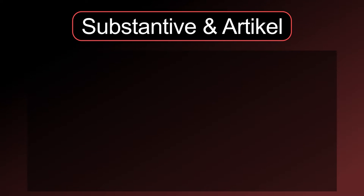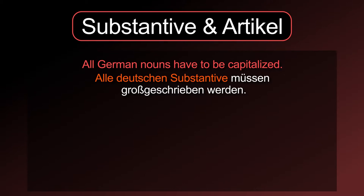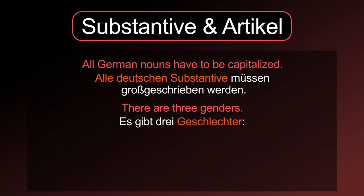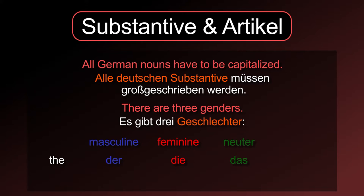Substantiver und Artikel. All German nouns have to be capitalized. There are three genders: Masculine, Feminine, and Neutral. The definite articles are der, die, das. Nouns in plural always have the article die. The indefinite articles are ein, eine, and ein. These are the articles for the nominative case. They will change in other cases.